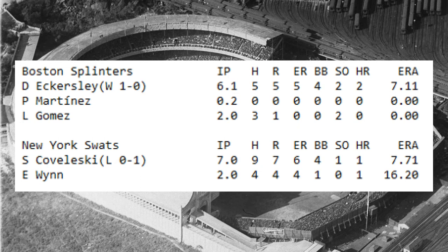On the pitching side: Dennis Eckersley pitched six and a third innings, allowed five earned runs, walked four, and struck out two. Pedro Martinez had two-thirds of an inning in relief and didn't allow a hit. Lefty Gomez pitched the final two innings, allowed three hits and a run, but struck out two. For New York, Stan Kowalewski went seven innings, allowed nine hits, seven runs — six earned — four walks, and struck out only one.